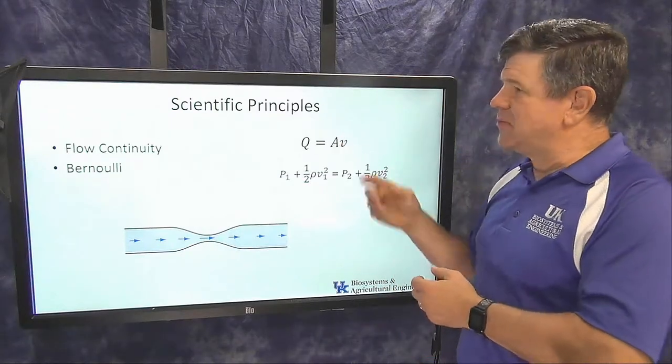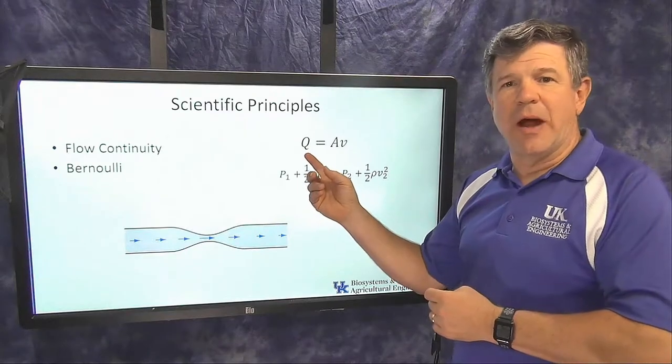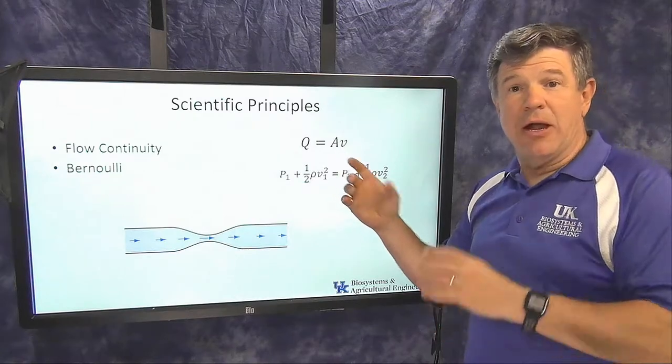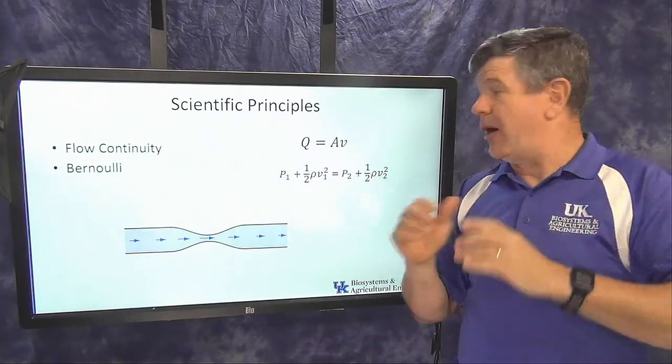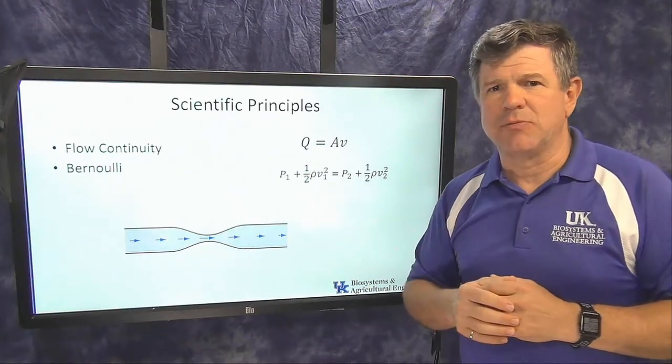The first principle is flow continuity. This equation says that the flow rate Q through some pipe is equal to the area, the cross-sectional area of that pipe, times the velocity, how fast that material is moving through there.